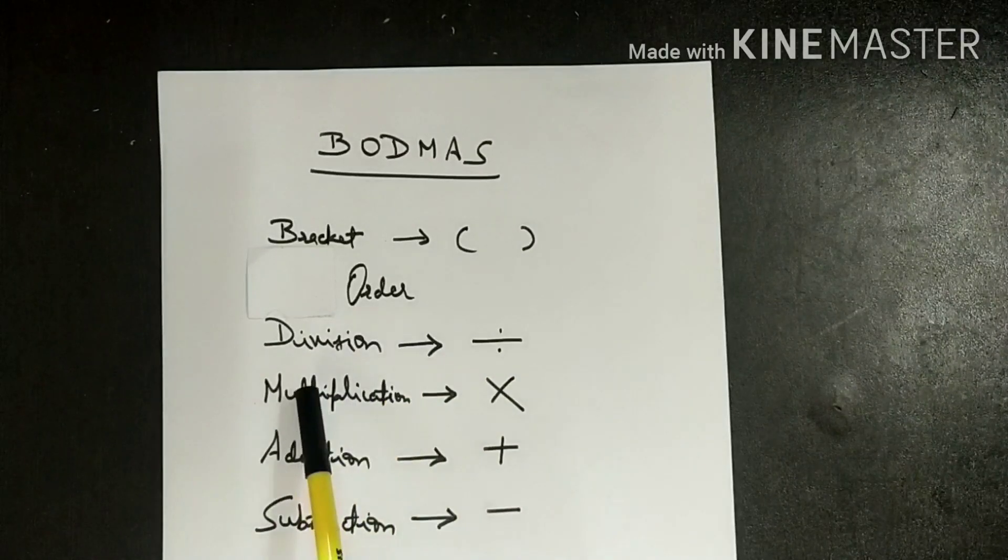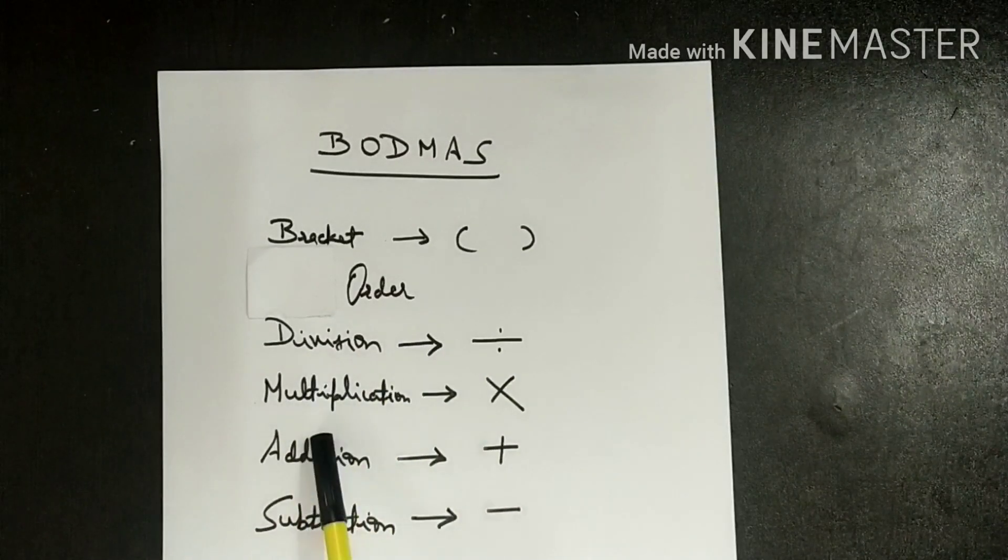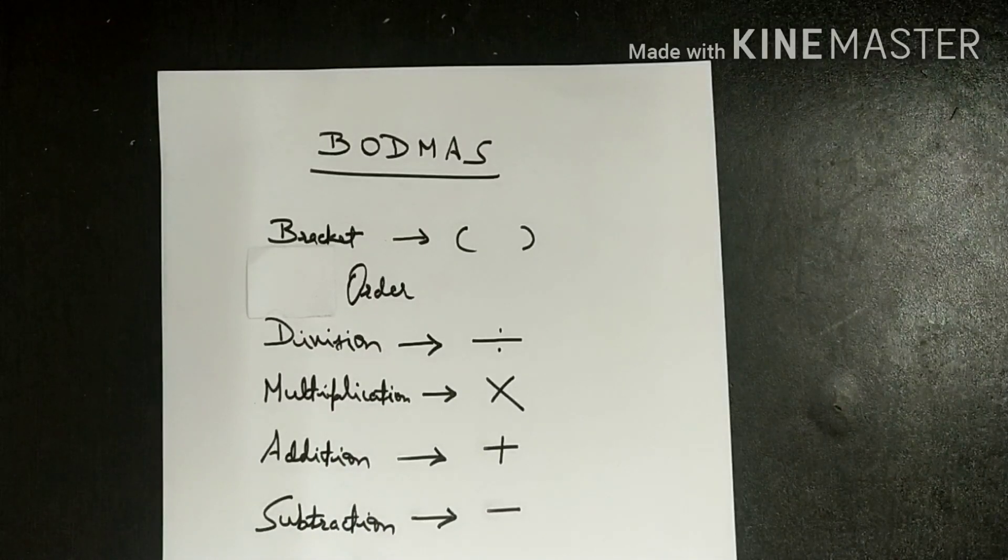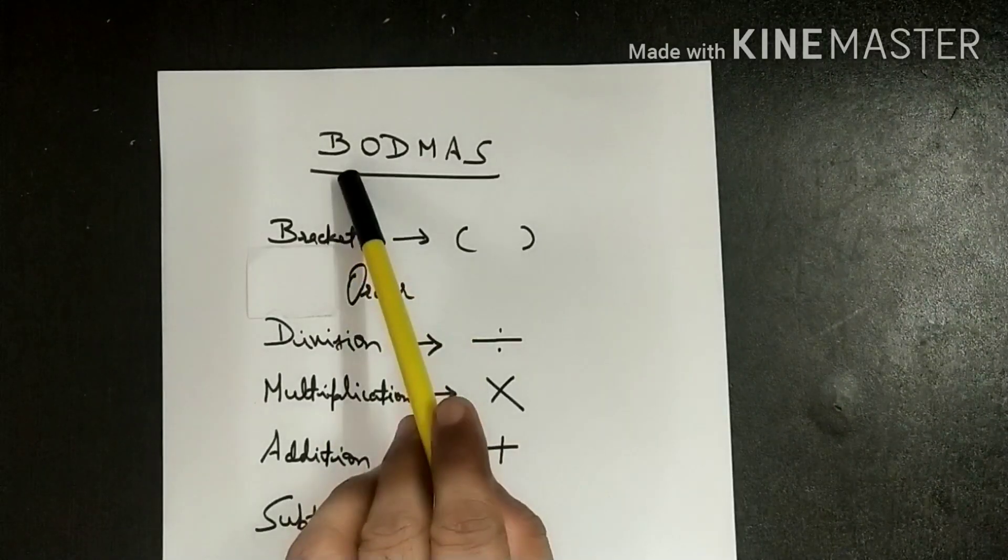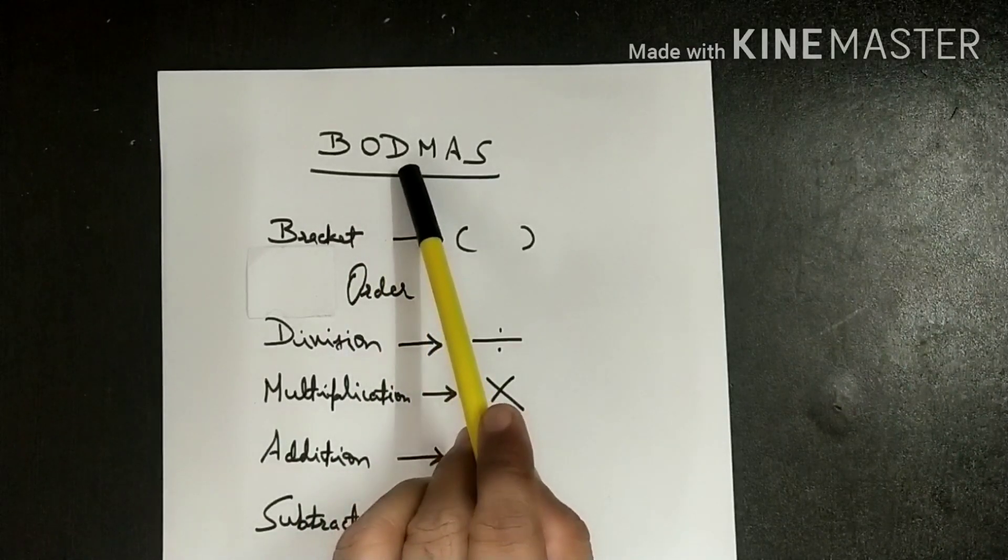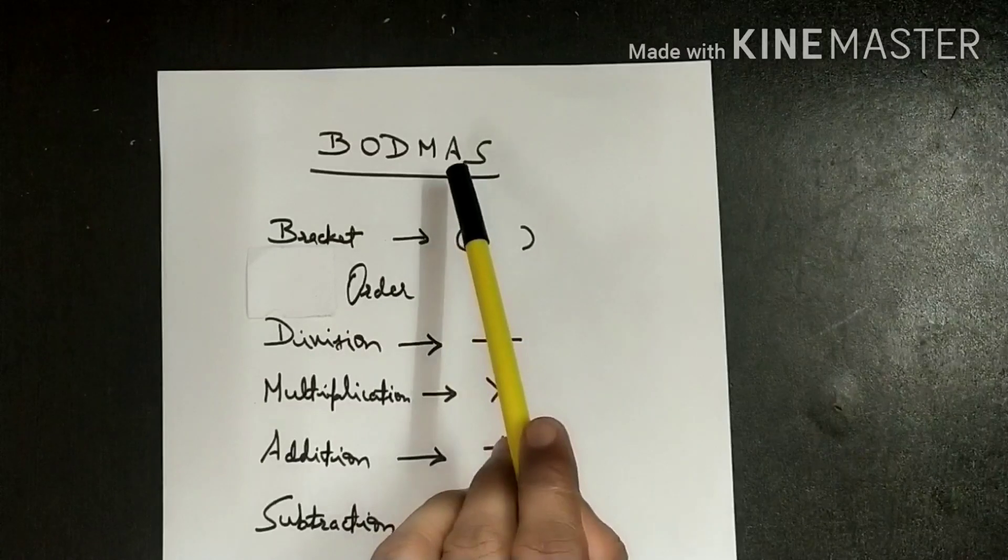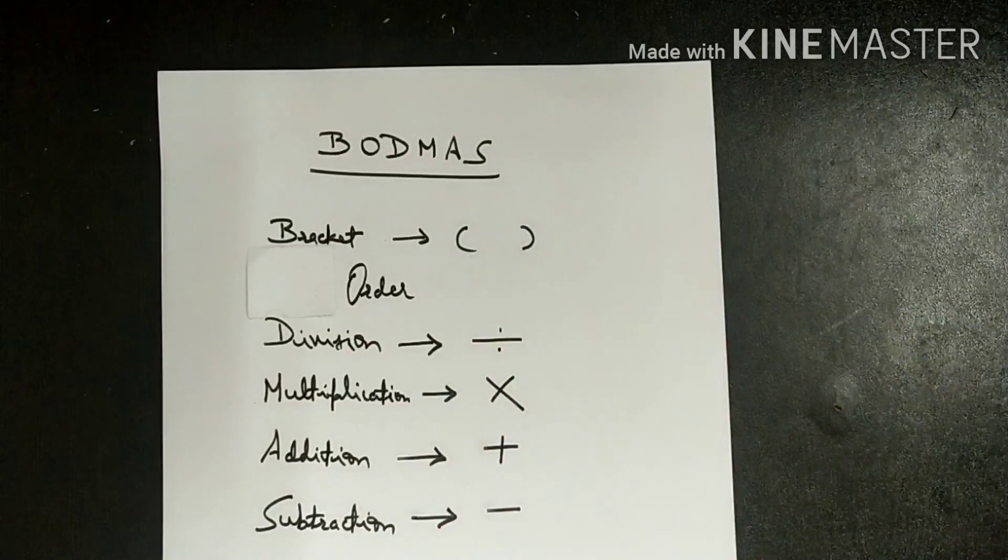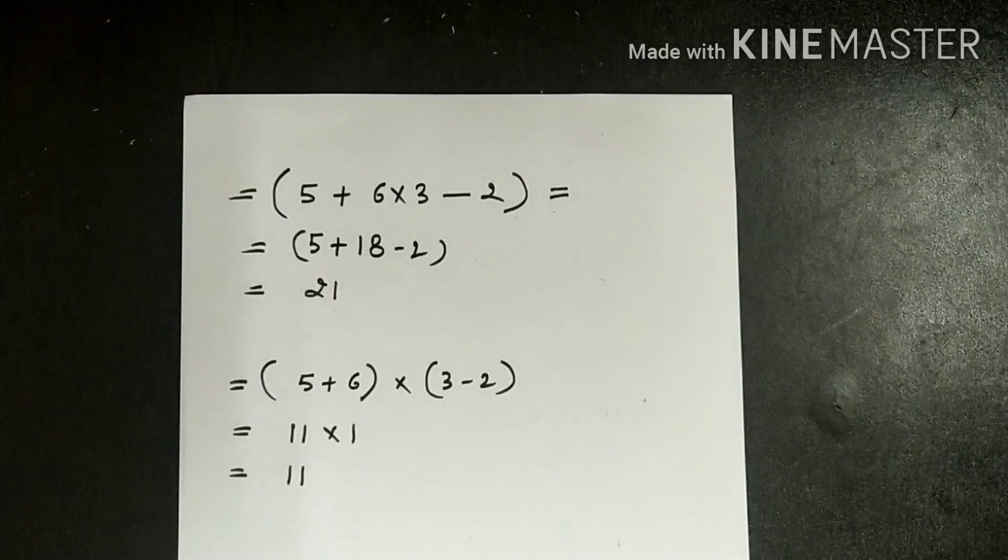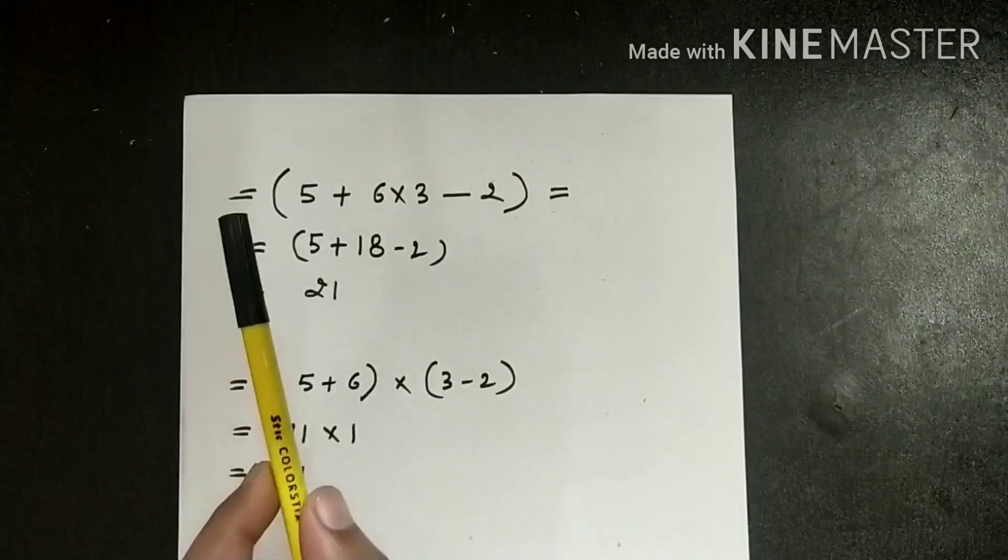Order, division, multiplication, addition, and subtraction. B stands for bracket, O for order, D for division, M for multiplication, A for addition, and S for subtraction. Try to understand BODMAS with an example. If you see, we have taken